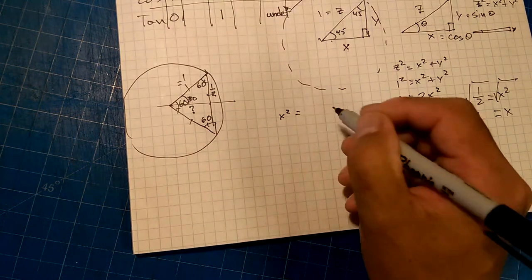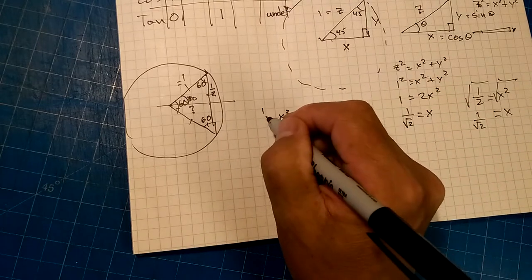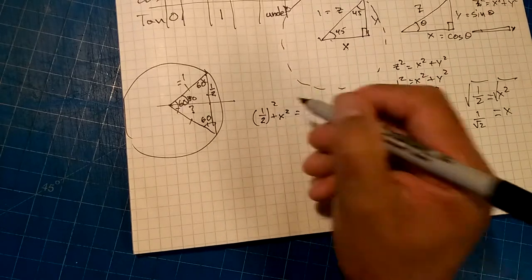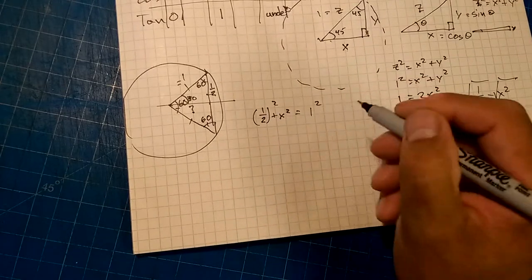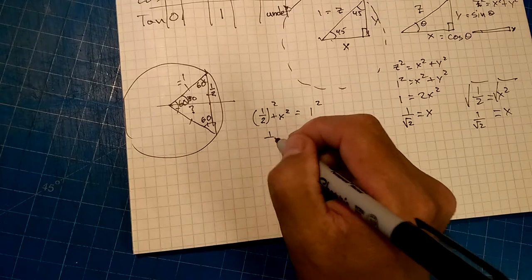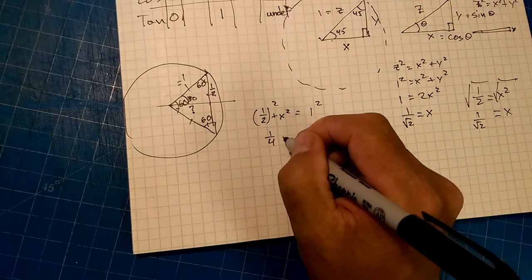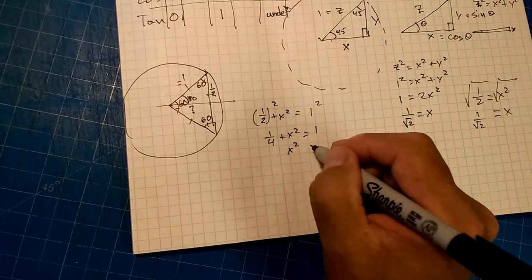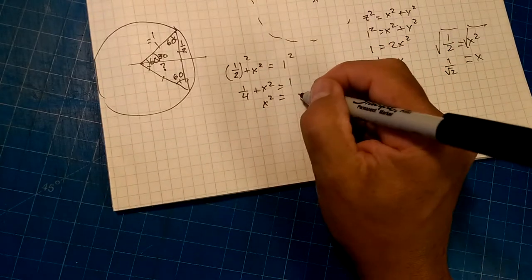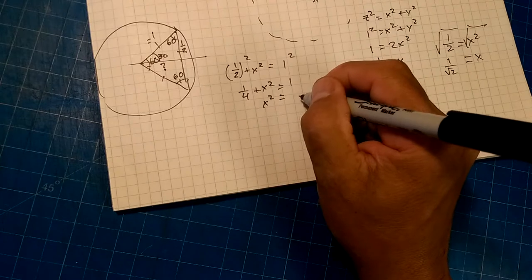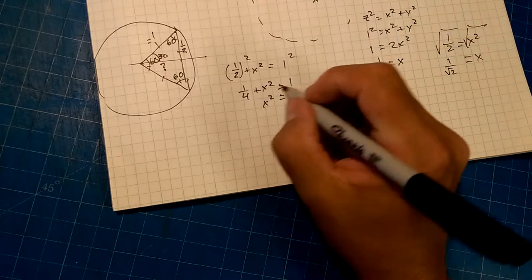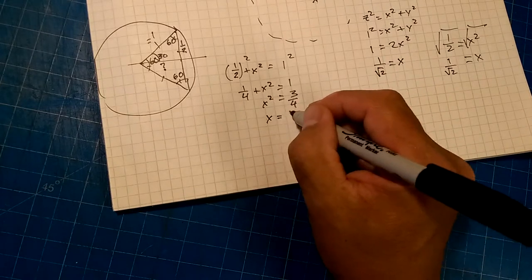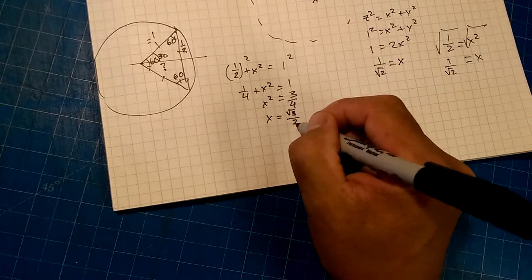So, x squared is equal to 1 half squared plus x squared is equal to 1 squared, right? So, 1 quarter plus x squared is equal to 1, or x squared is equal to, wait, what am I doing? Subtract a quarter from both sides, 3 quarters, so x is equal to root 3 over 2.